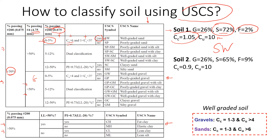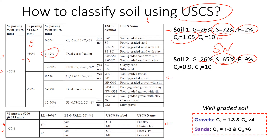Now for Soil 2: we have 26 percent gravel, 65 percent sand, and 9 percent fines. Because less than 50 percent are fines, we again use the top part of the chart. We have more sand than gravel, so we go into the sand section. With 9 percent fines falling in the range of 5 to 12 percent, we will have a dual classification.